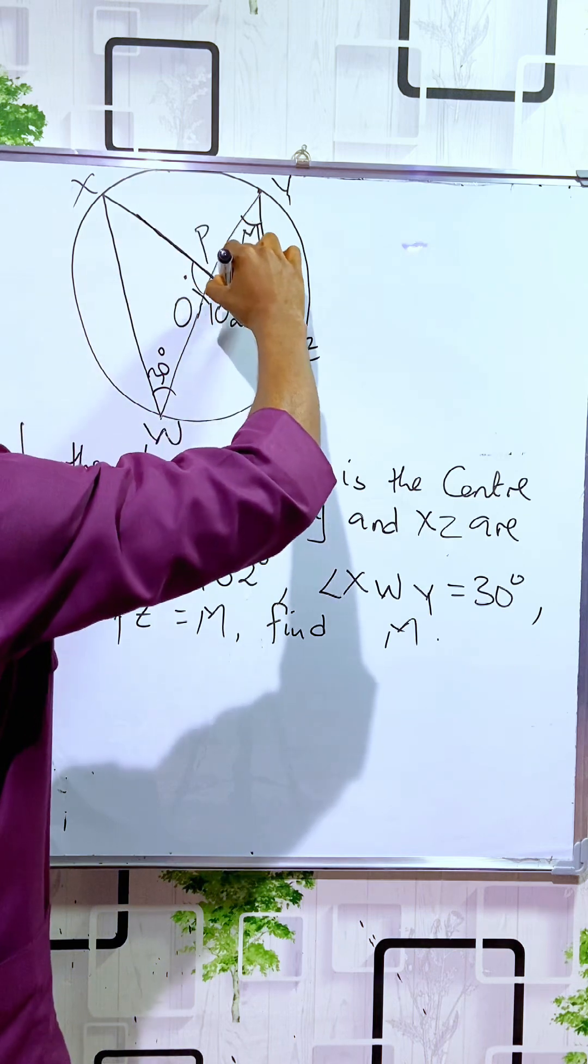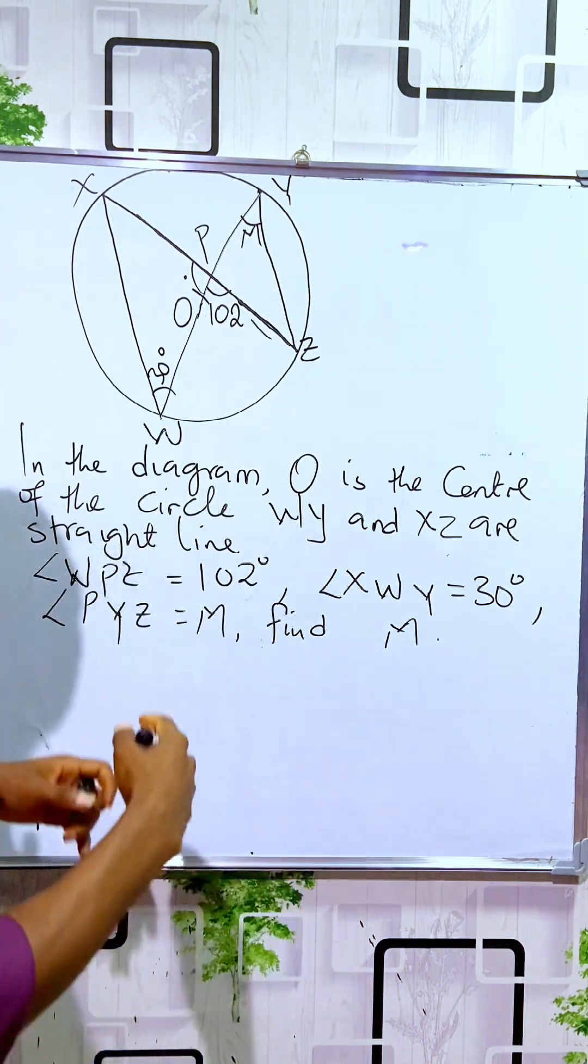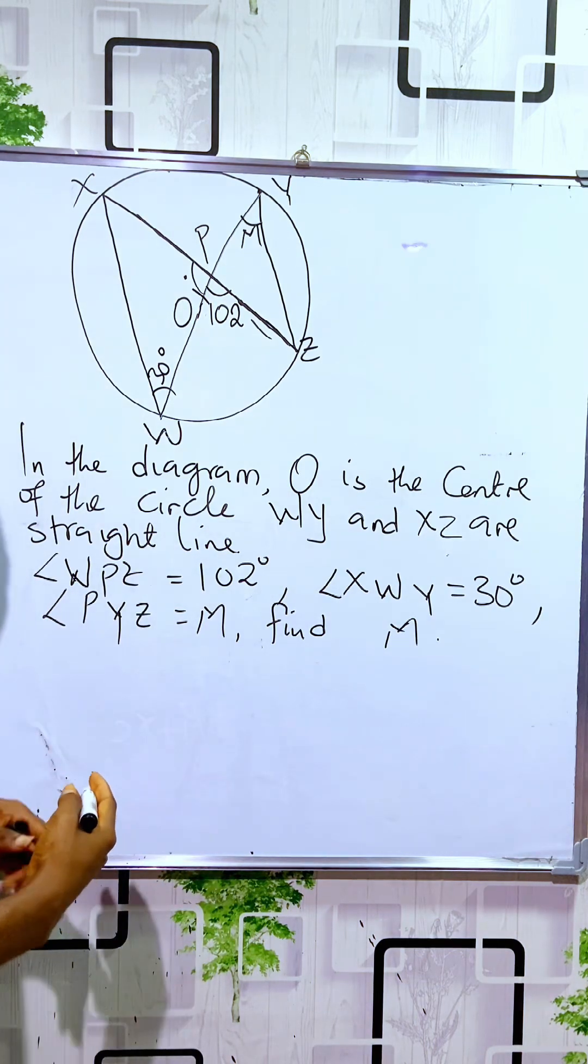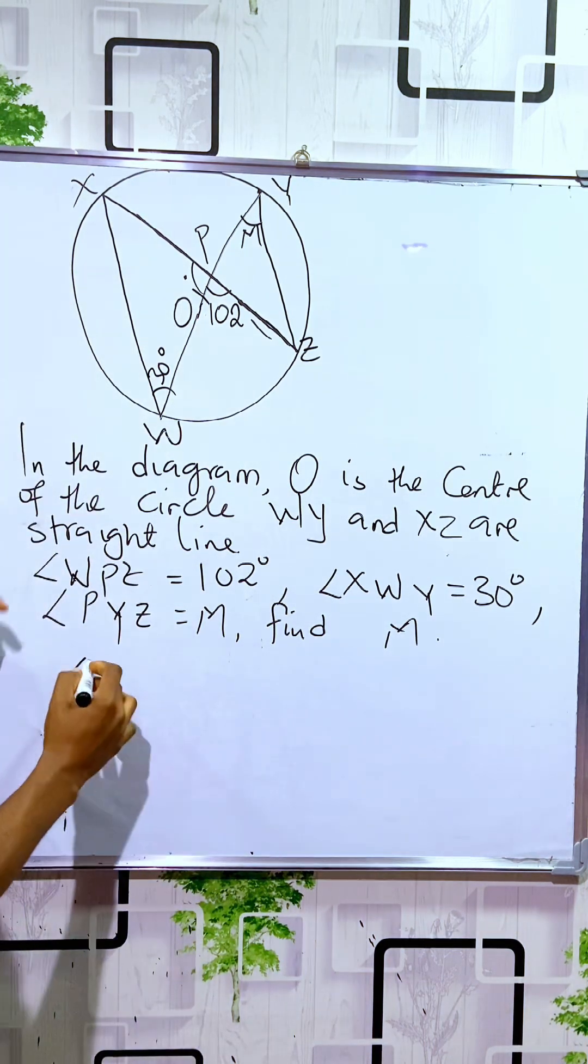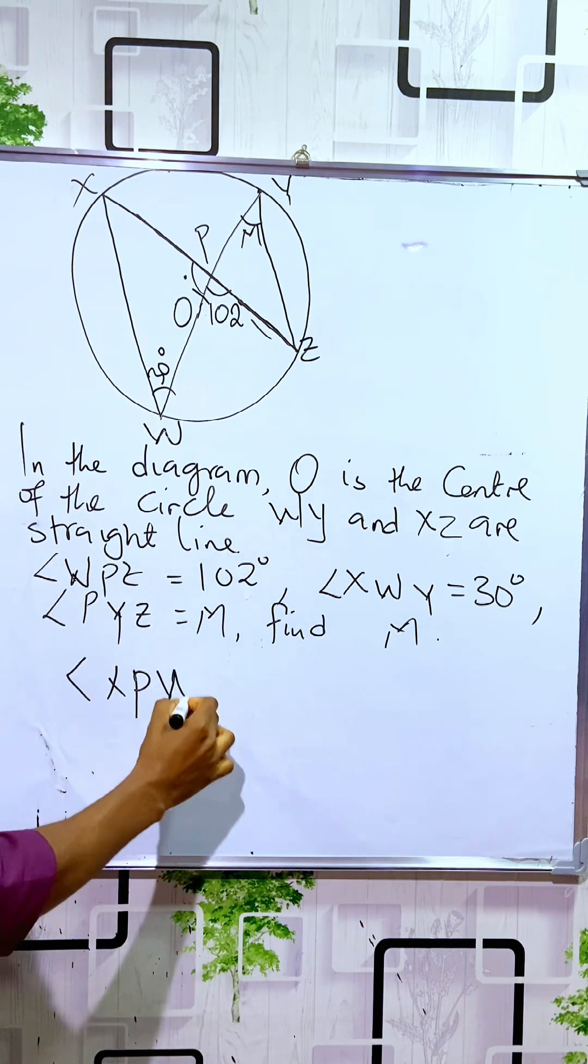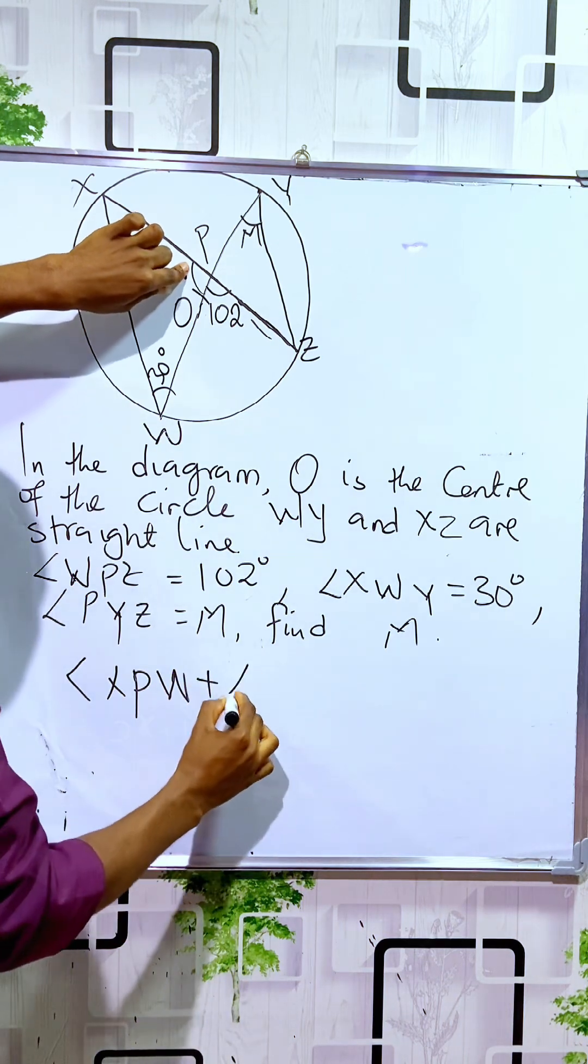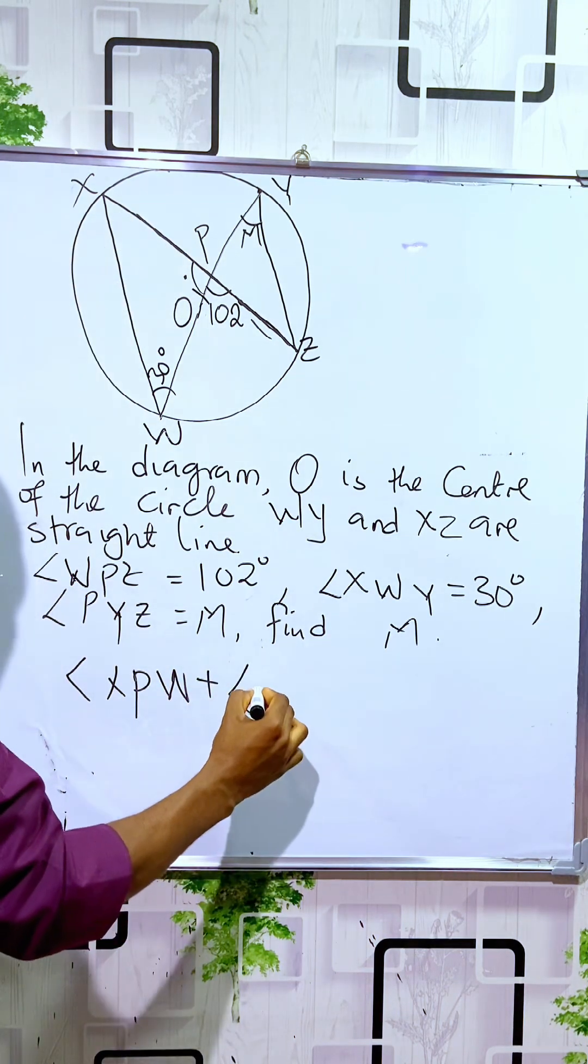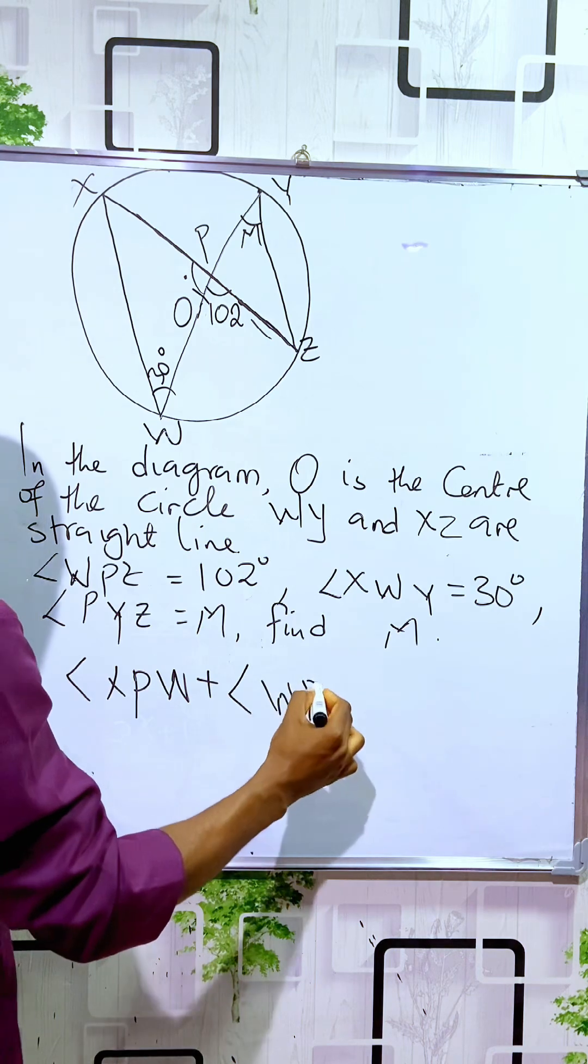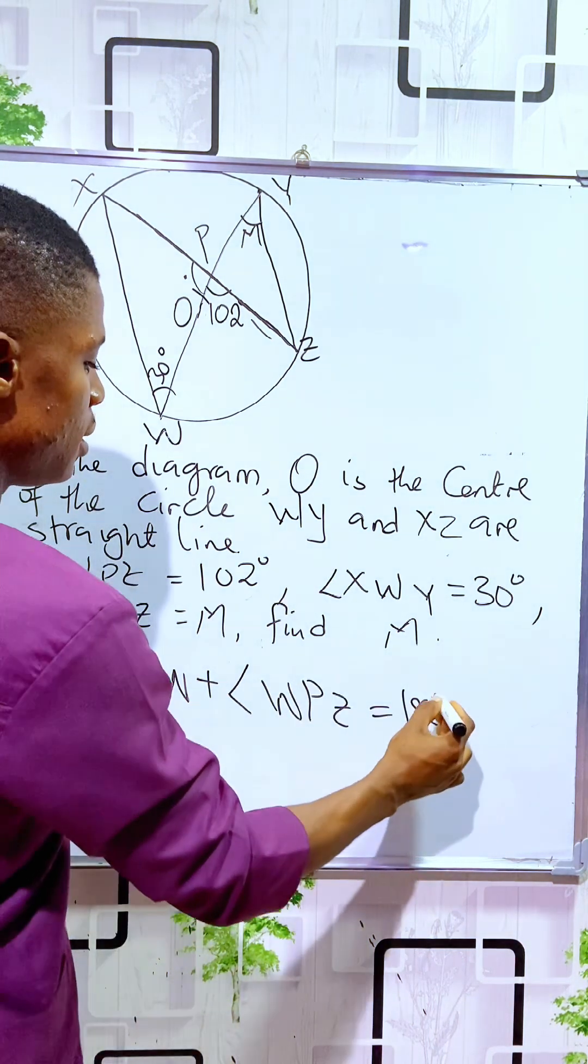Recall that this is a straight line, and angles on a straight line equal 180 degrees. So angle XPW plus angle WPZ equals 180 degrees. Since angle WPZ is 102 degrees, we have angle XPW plus 102 equals 180.